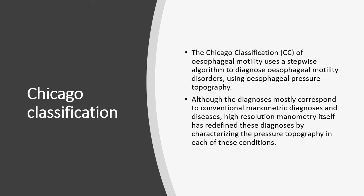The Chicago classification of esophageal motility uses a step-wise algorithm to diagnose esophageal motility disorders using esophageal pressure topography. Although the diagnosis mostly correspond to conventional manometric diagnoses and diseases, high-resolution manometry itself has redefined these diagnoses by characterizing the pressure topography in each of these conditions.